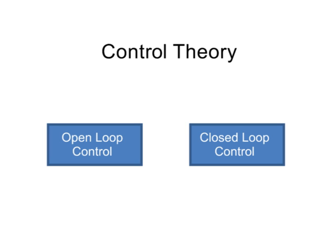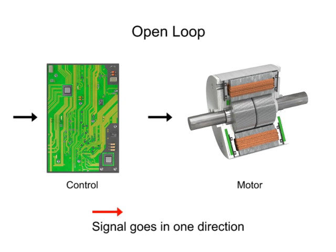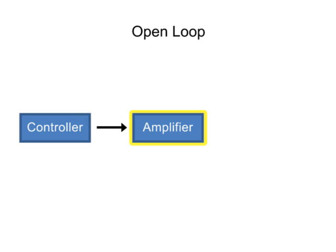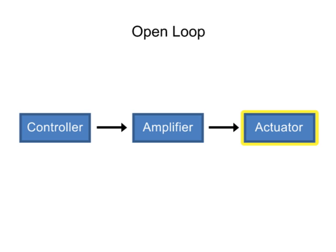Categories of control theory are defined as open-loop and closed-loop control. In an open-loop system, the output is not measured or monitored for comparison with the system set point. Open-loop systems are commonly referred to as non-feedback systems.